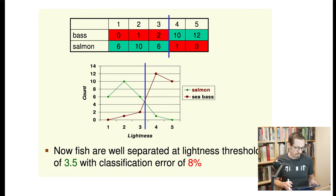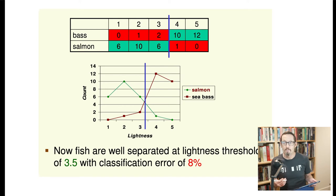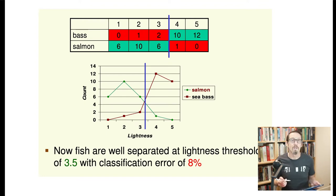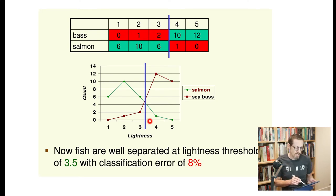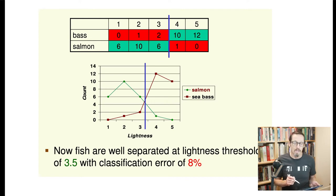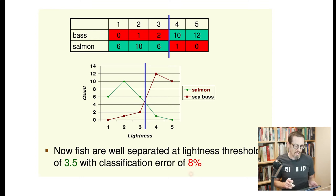We could also notice that sea bass are a little lighter than salmon. If we use the average brightness of fish pixels as a feature, the area under the curve for misclassified fish is significantly smaller. When we pick the best discriminating line — the one that minimizes misclassification — we get a classification error of 8% on this dataset.